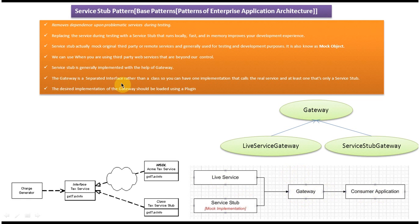The Gateway is a separated interface rather than a class. You can have one implementation that calls the real service and another implementation that calls the Service Stub. So the Gateway will be an interface, and we can provide two kinds of implementations: one implementation will call the real web service and another implementation will call the Service Stub.